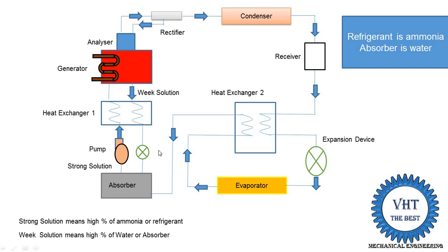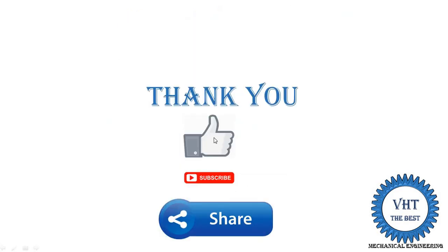To recap: the analyzer is used to separate water vapor particles from the ammonia vapor before it reaches the condenser, because water particles would cause choking in the expansion device. The rectifier also performs the same function — removing remaining water vapor particles and supplying them back to the generator. Heat exchanger 2 works as a sub-cooler and increases the refrigerating effect. Heat exchanger 1 works as a heat supply device for the generator, reducing the work done. Both heat exchangers together increase the overall performance of the system.